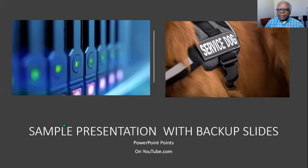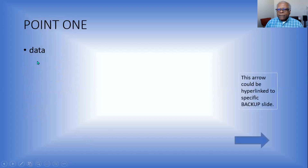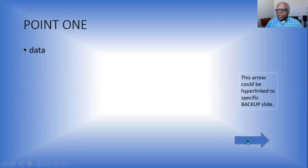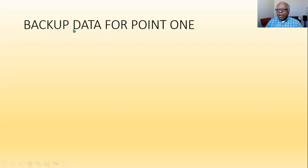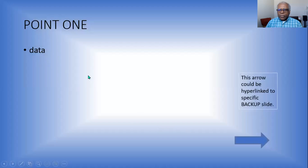Now we're at the presentation and we're going to show you these examples. You're going to typically always have an agenda slide. For this first example, I'm showing how you would make a symbol — in this case an arrow — to hyperlink from the main presentation to the backup slides. Then we have another arrow to come back to where we started. So if this is for point one, you just click the hyperlink, and now you're at the backup data for point one. Here I have a second slide with some more data, and then this arrow would return you to where you came from.